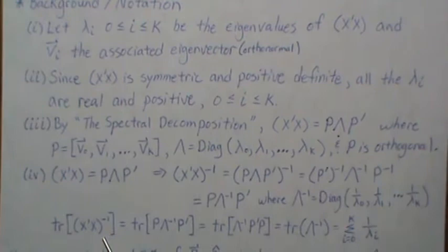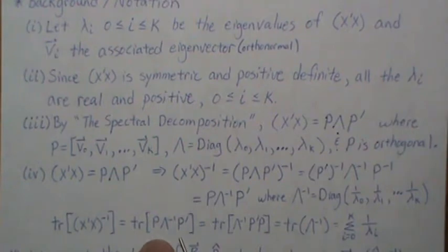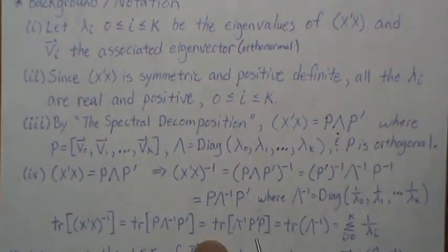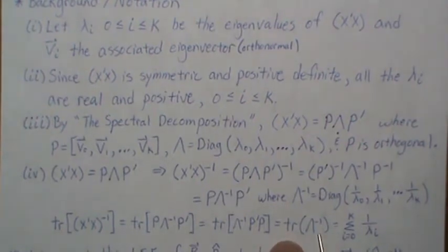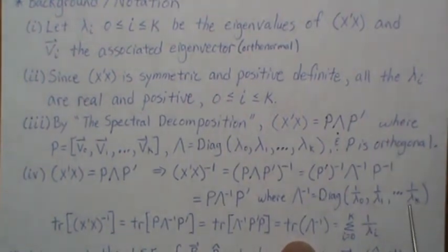The trace of this inverse matrix equals the trace of P Λ⁻¹ P'. Using the cyclic property of the trace, this becomes the trace of the identity matrix times Λ⁻¹, which is just the trace of Λ⁻¹. The trace of a diagonal matrix is the sum of its diagonal elements, so this is just the sum of 1/λᵢ.